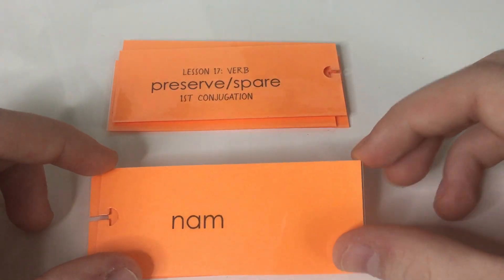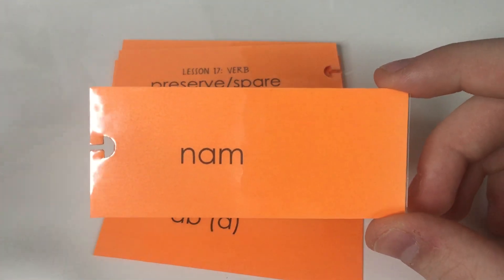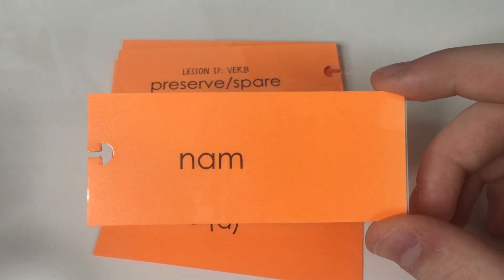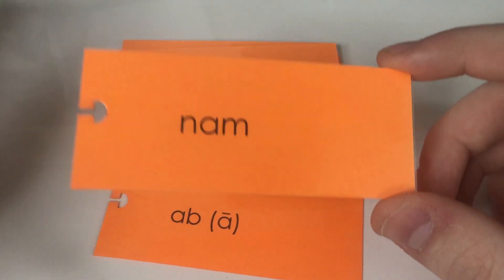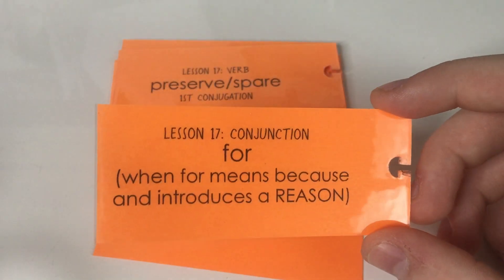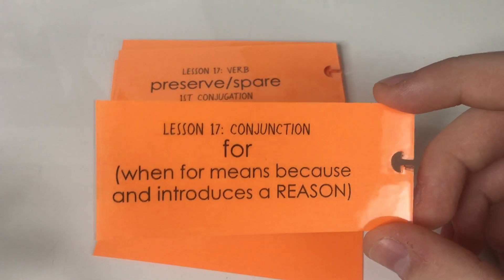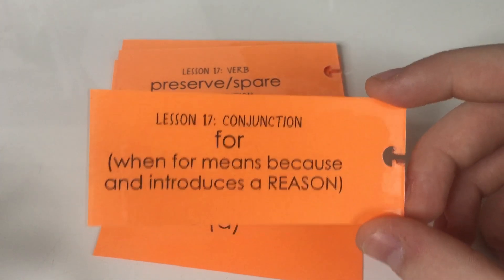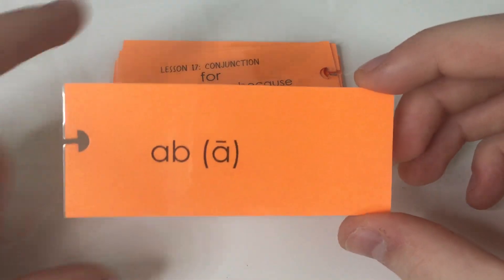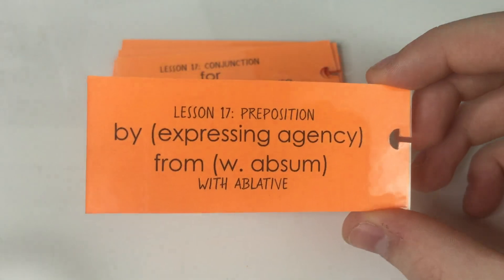And then we have nam. Remember, even though it means 'for,' it doesn't have four letters — it only has three. It's the 'for' that has three letters, f-o-r, not f-o-u-r, whenever it means because. And then we have ab or a, which means by or from.